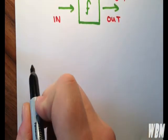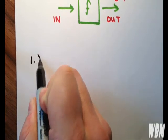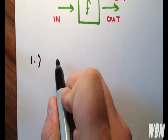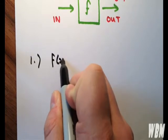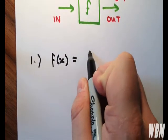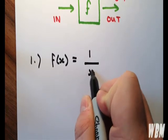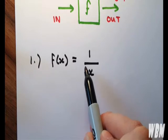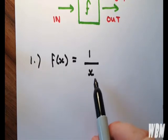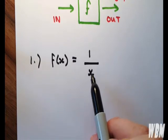The first one, in no particular order, is when you have a number. Say you're given the function f(x) equals 1 over x. You want to make sure that x isn't 0, because